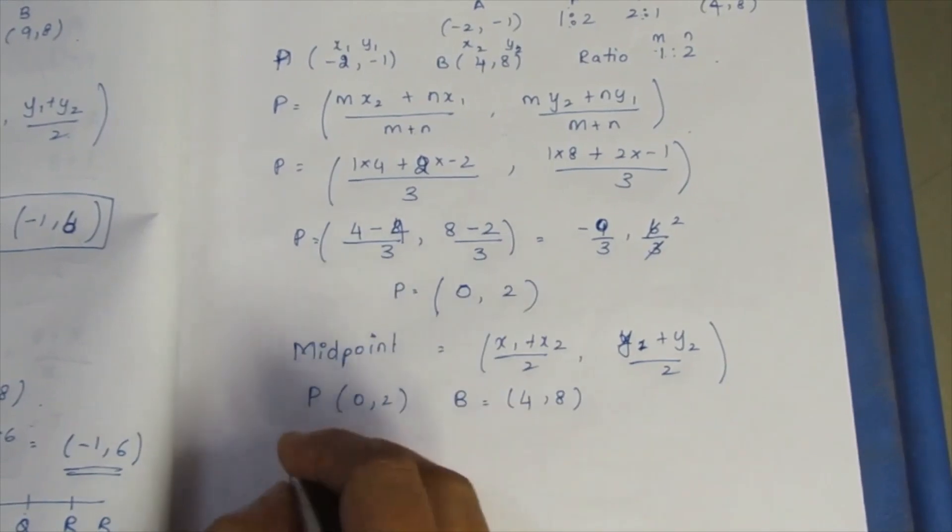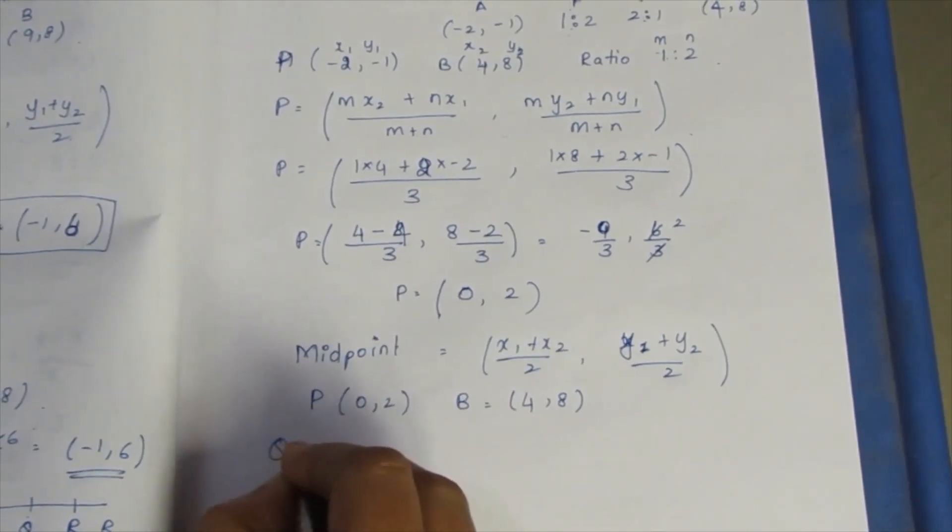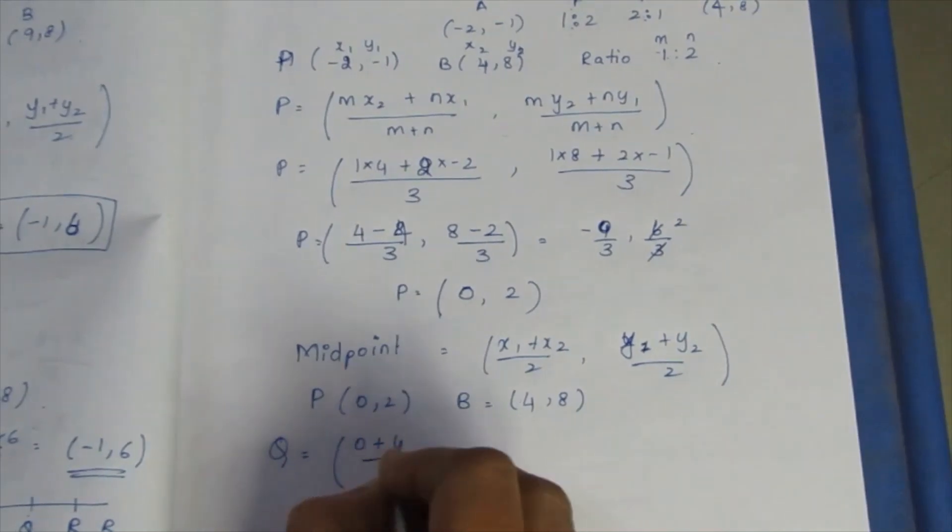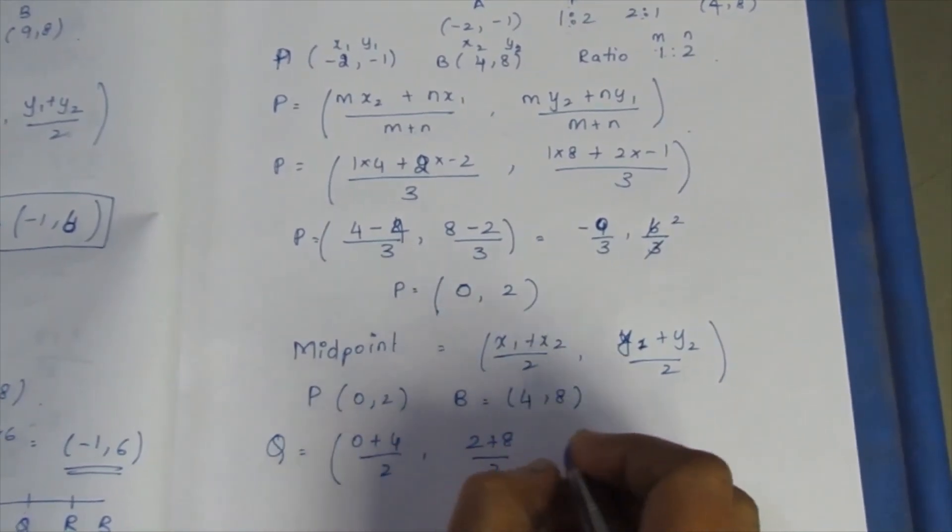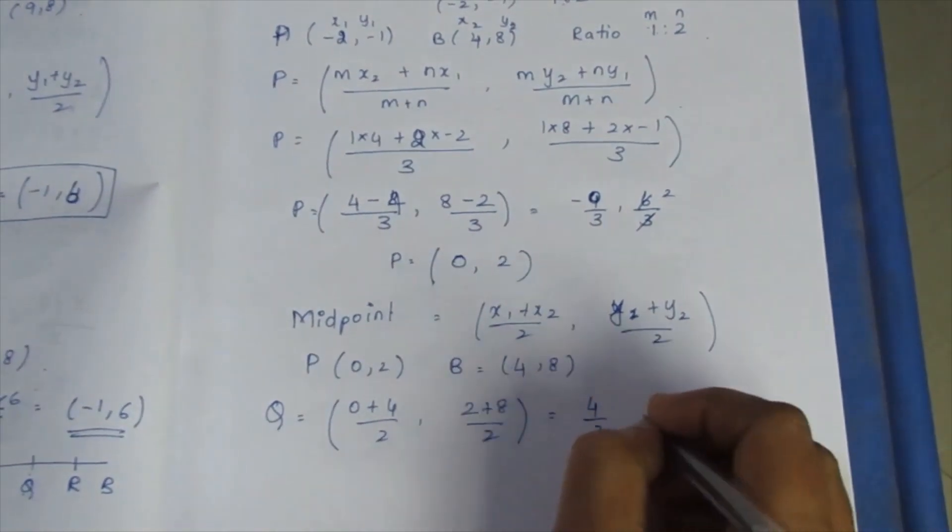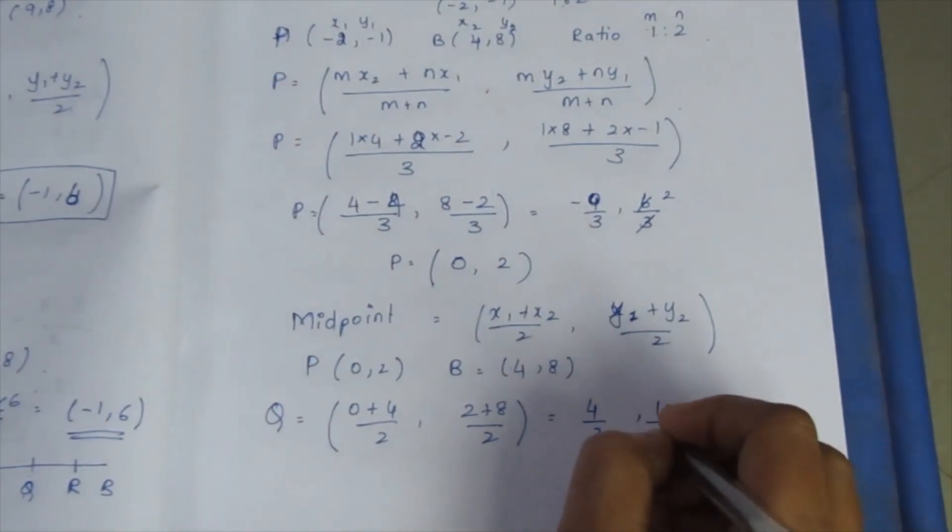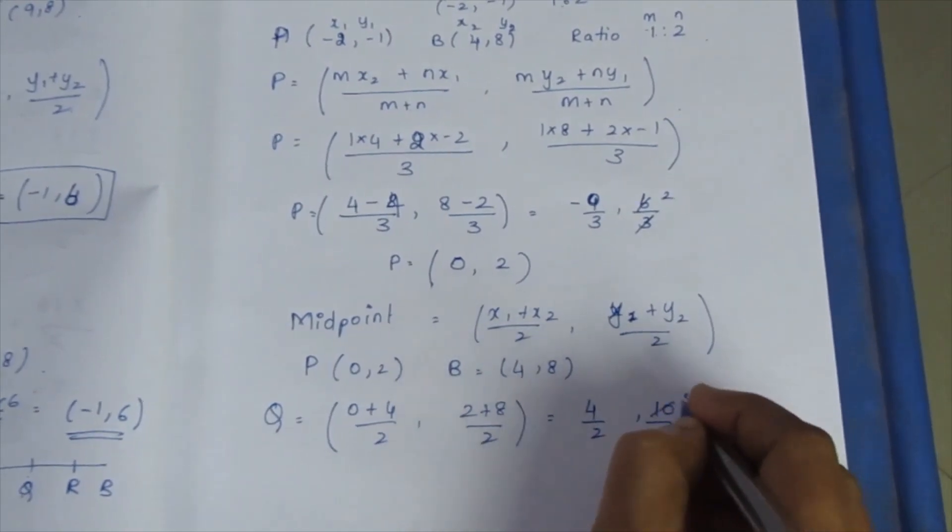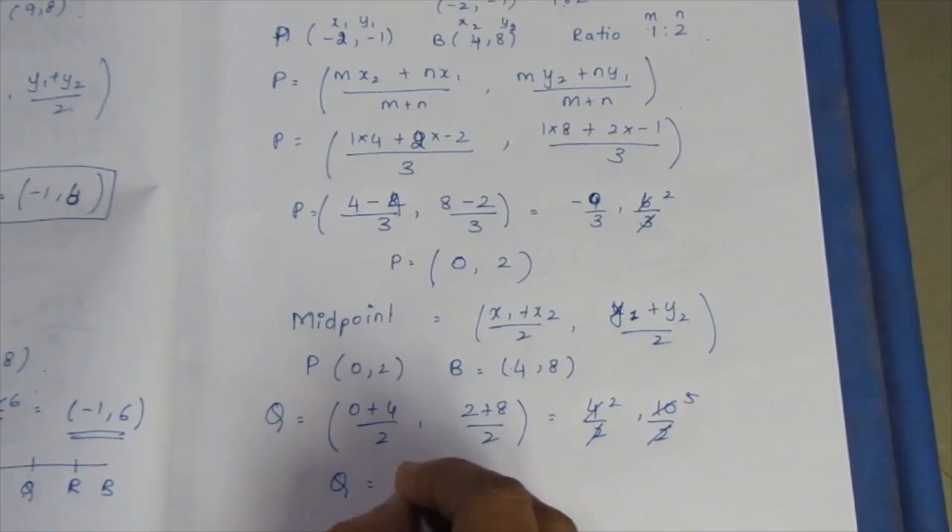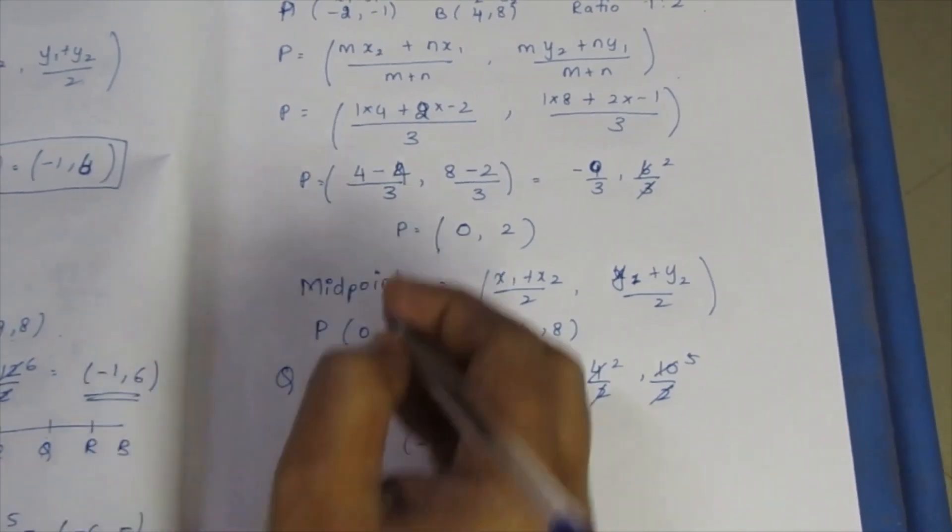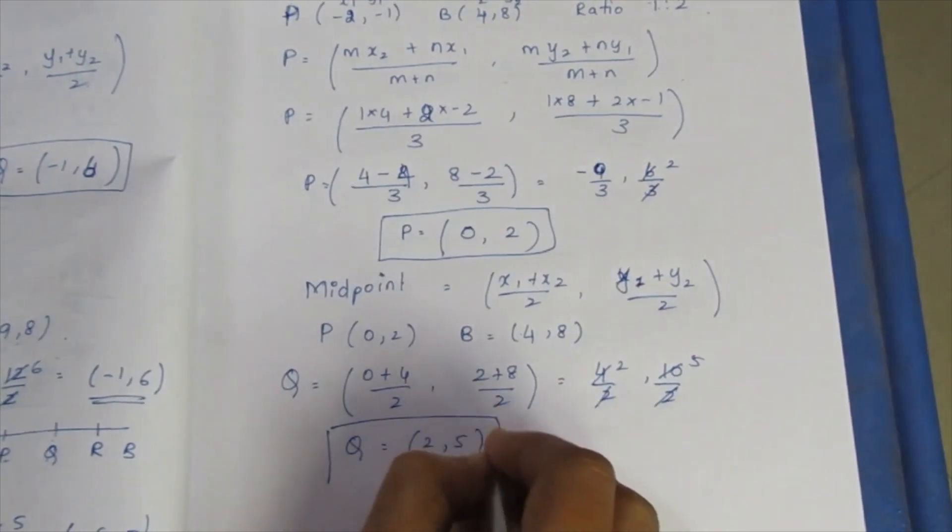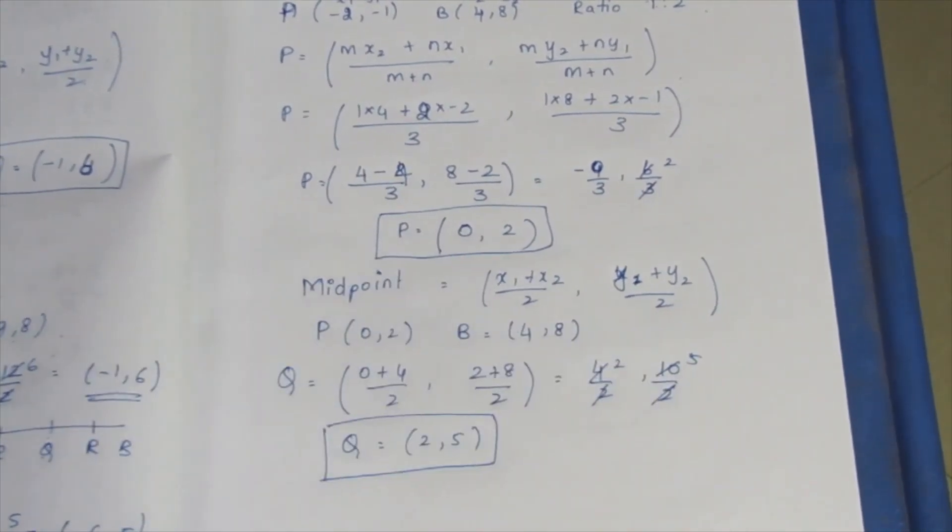P and B: P is (0, 2), B is (4, 8). Q equals: 0 plus 4 by 2, 2 plus 8 by 2. 4 by 2, 10 by 2. 2 cancels, so Q = (2, 5). P and Q found using midpoint formula.